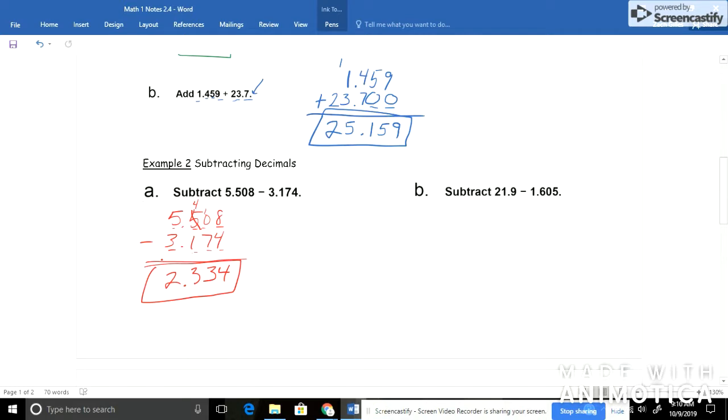And for letter B, I've got 21.9 minus 1.605. Make sure to line up your decimals. 1.605. Again here, I'm missing some numbers. So what I can do is I can add in zeros, and it doesn't change my number at all. It's still the same number.